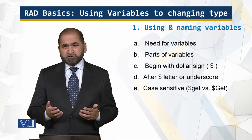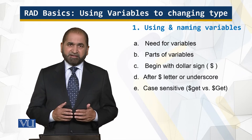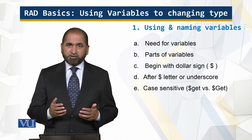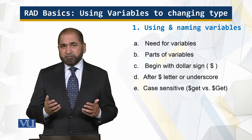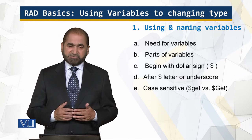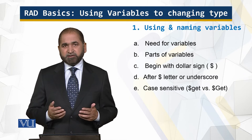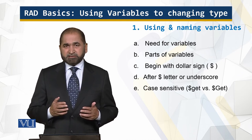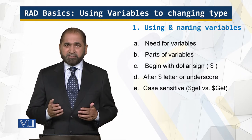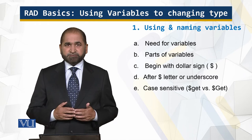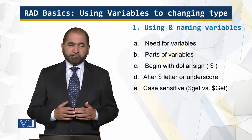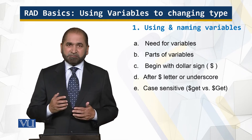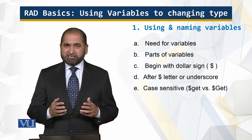In PHP, variable names start with the dollar sign. Subsequent to the dollar sign, there can be a letter — an English letter or an underscore. You are not allowed to use a number after the dollar sign. Remember that variables declared in PHP are case sensitive. It means that a variable dollar-GET with capital G is treated differently from dollar-get with lowercase g. PHP is case sensitive — that is the bottom line.